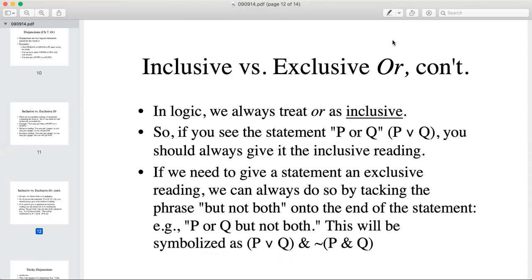So whenever you see a statement of the form P or Q but not both, that is an explicit exclusive OR, and we're going to translate it exactly as we have here.